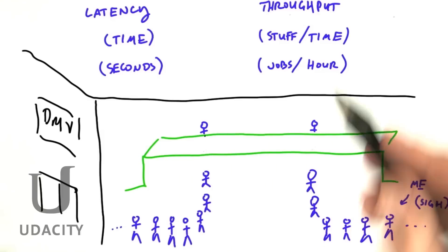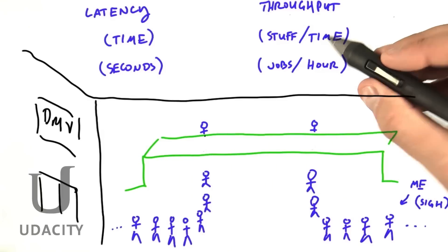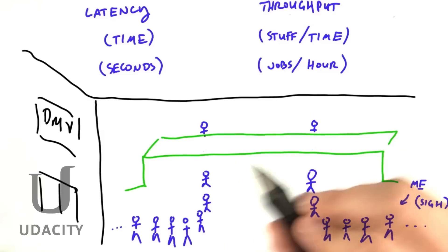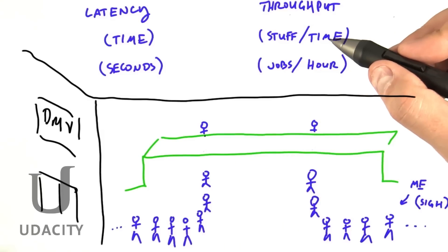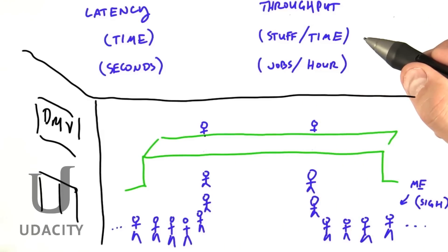Consequently, these two people sitting behind the desk right here that work for the DMV want long lines. Long lines mean their hardworking employees are always busy because there's never a time they don't have a customer waiting.